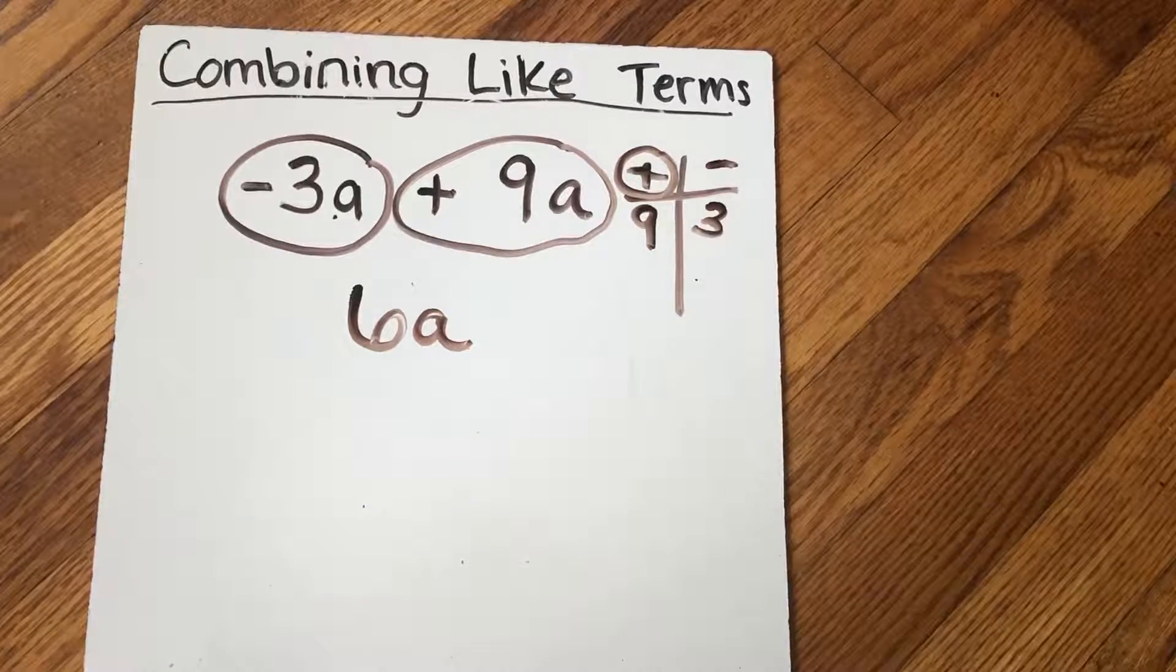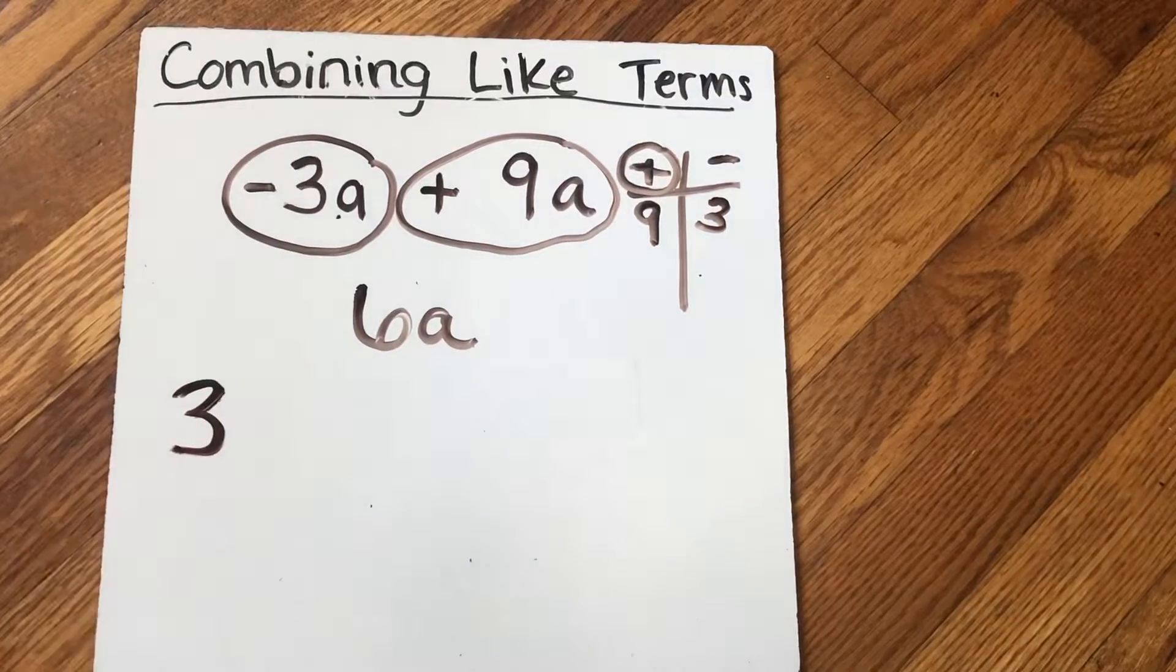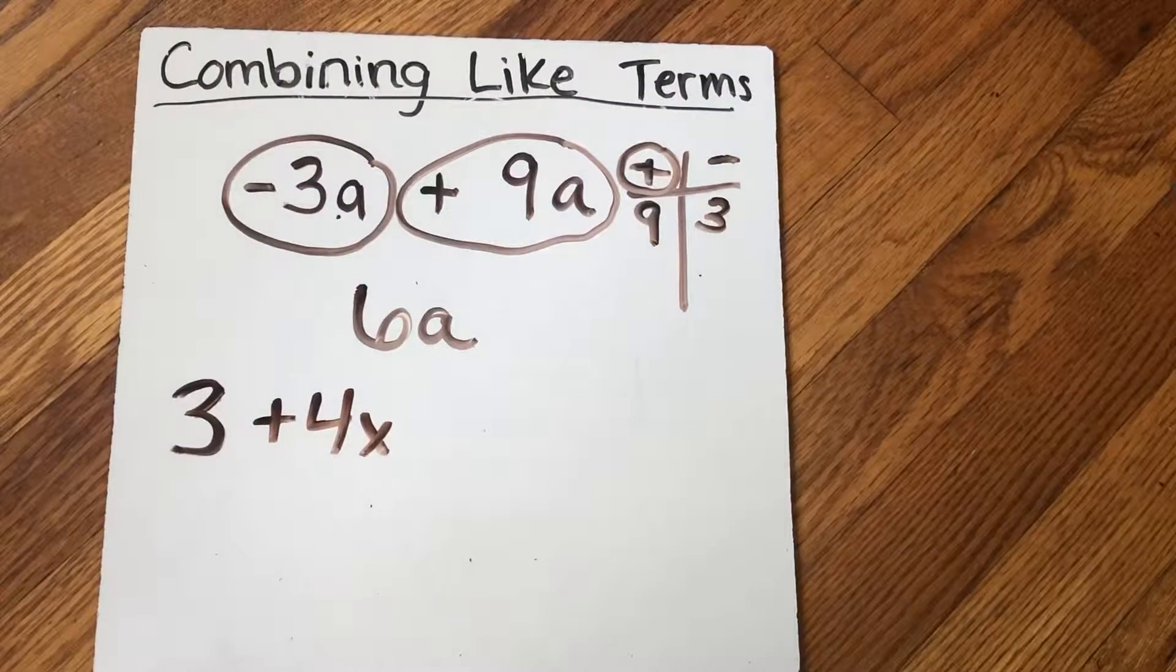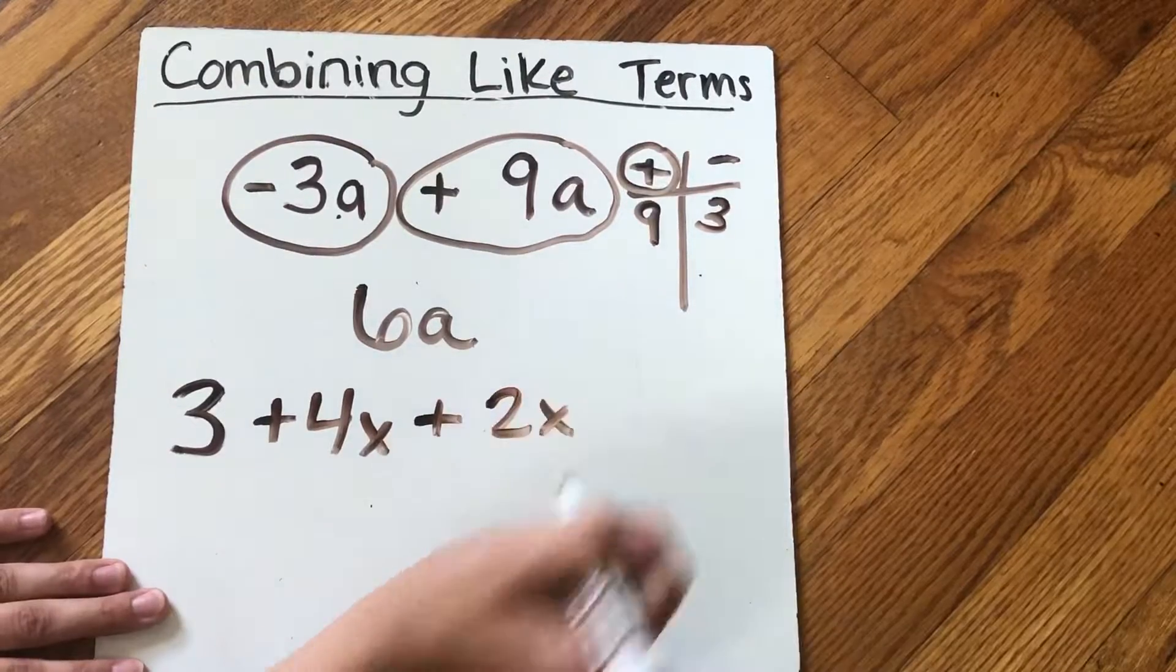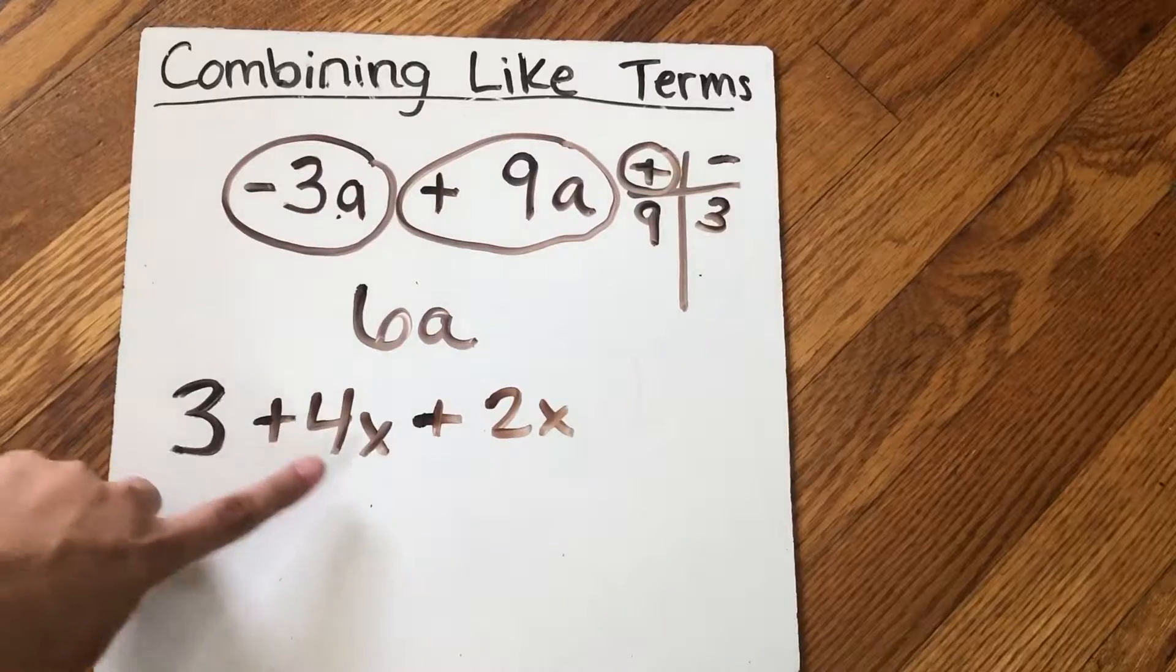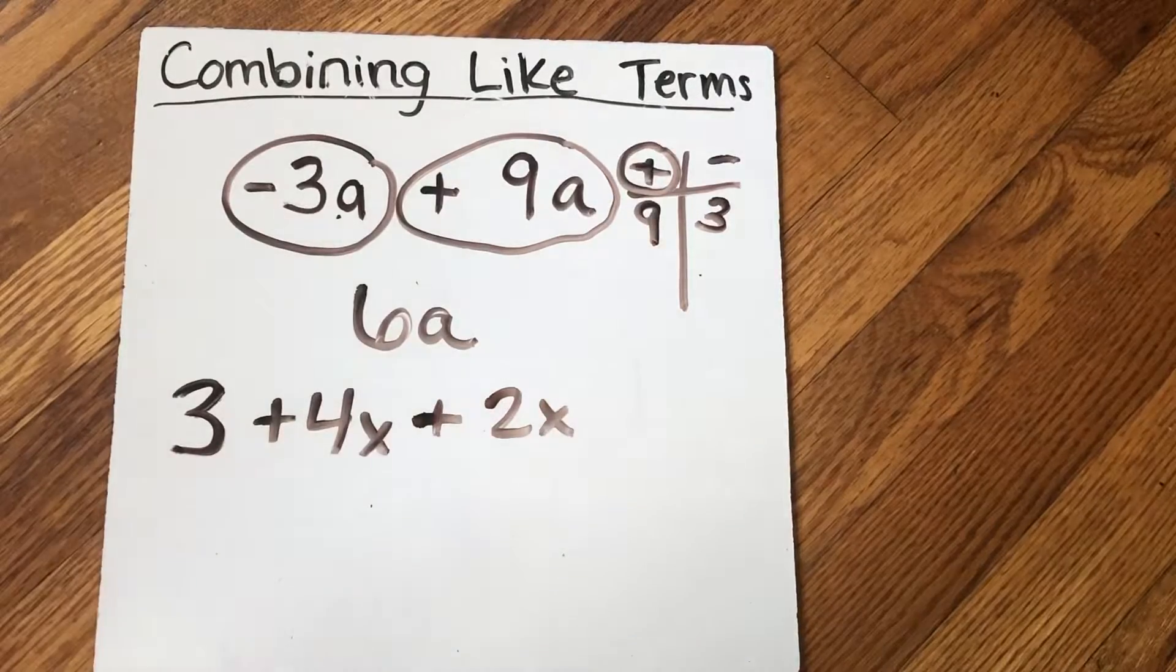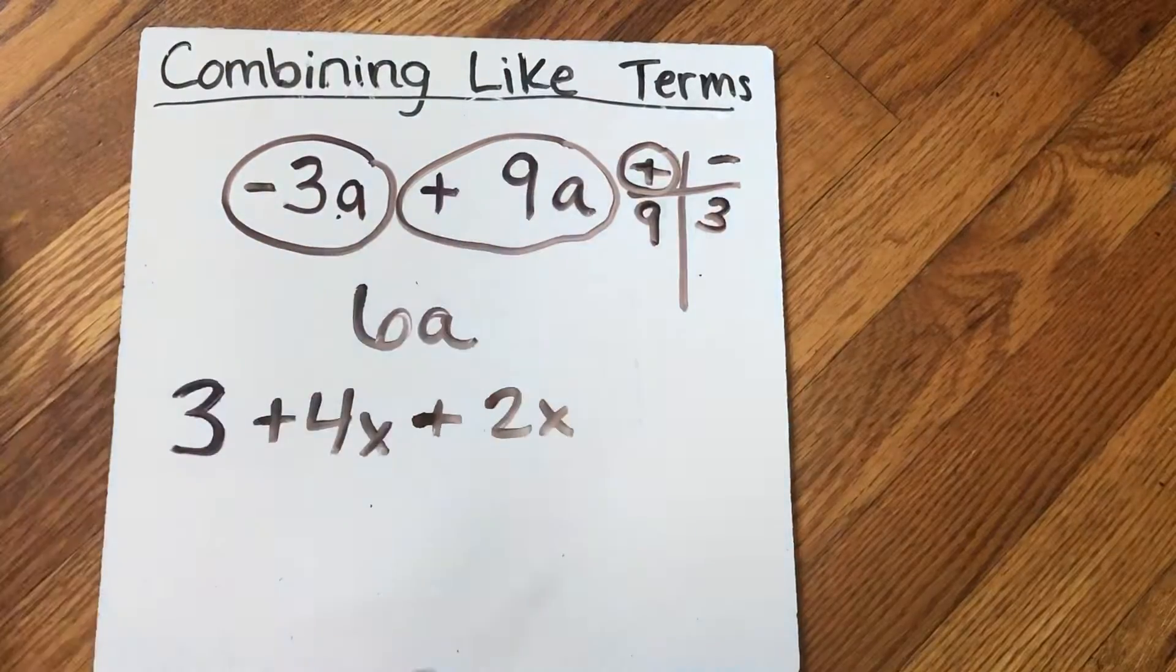Let's look at another one. Let's say I have just the number 3 by itself, plus 4x, plus 2x. Alright, so if you want to assign a term to that, x is kind of a hard one. I often just use x-men. I have four x-men on one team, and they're going to join forces with these two other x-men. So what is similar here? What is alike?